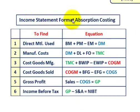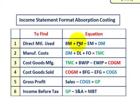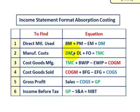The next thing is the income statement format for absorption costing — it's really a six-step procedure. First, we determine direct material used: take beginning materials, add purchased materials for the period, and subtract ending materials — that gives us direct material used. Second, we determine total manufacturing costs: take direct material used, add direct labor, and add factory overhead — both variable and fixed portions — to get total manufacturing costs (TMC).